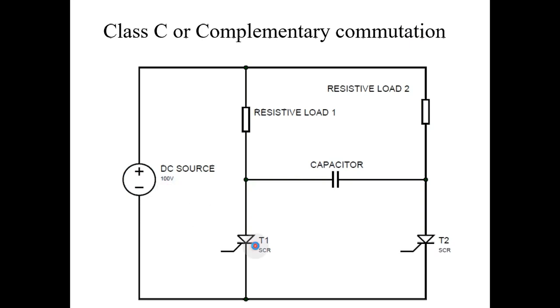Initially, when main thyristor T1 is fired, current flows to charge the capacitor: from the positive plate of the DC source, through load 2, the capacitor, thyristor T1, and back to supply. In this case, the capacitor charges with the right side plate positive and left side plate negative.